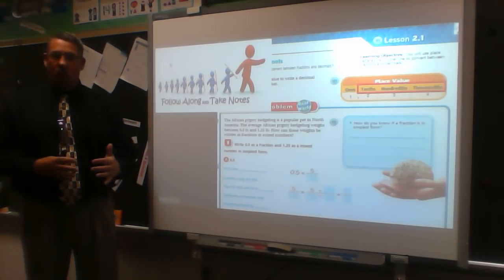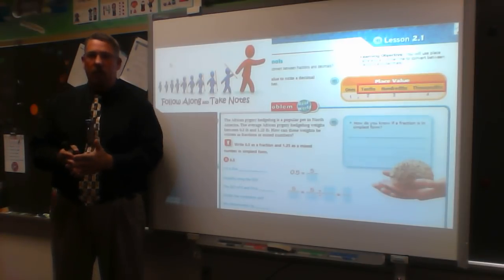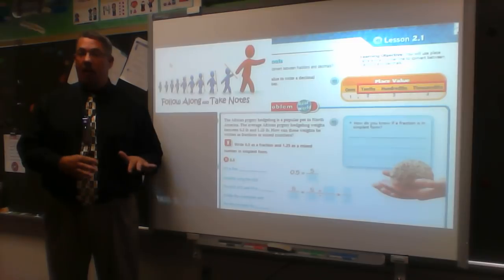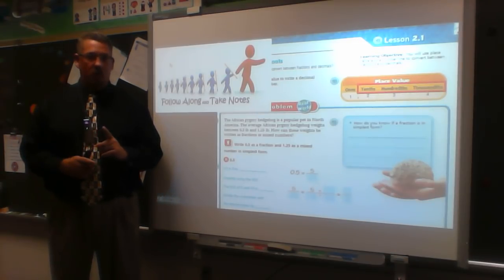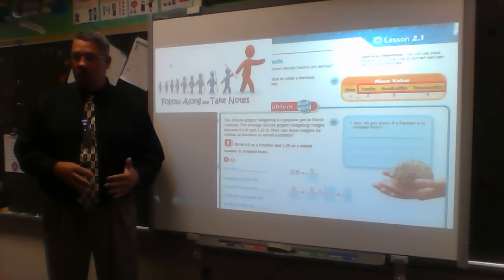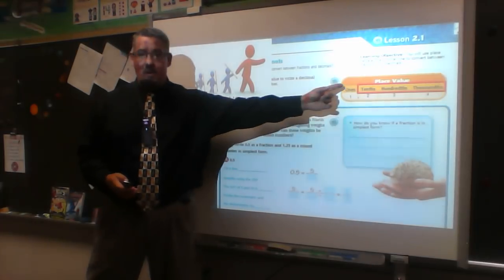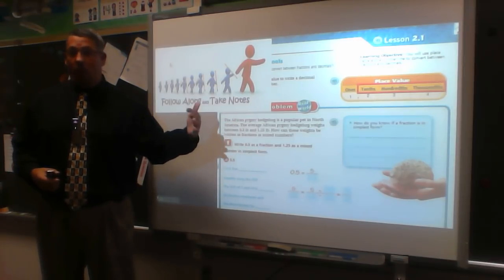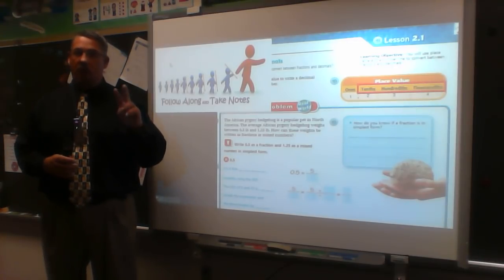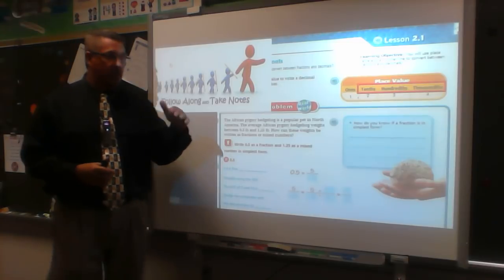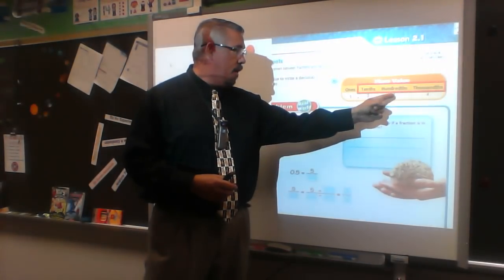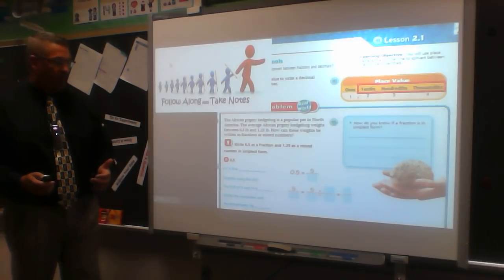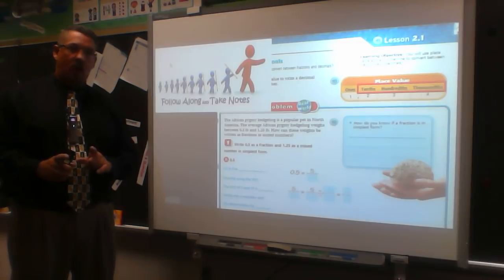0.5 is five tenths — it's important to understand where that decimal point is. The other weight is 1.25. For 0.25, the last digit tells me the position: 25 is in the hundredths position, so I say 'twenty-five hundredths,' making 1.25 'one and twenty-five hundredths.' To convert these to fractions, knowing my denominator and numerator tells me exactly how to write it.